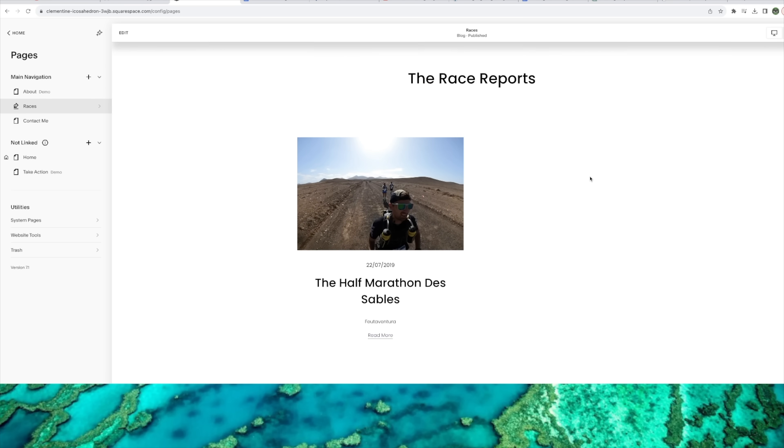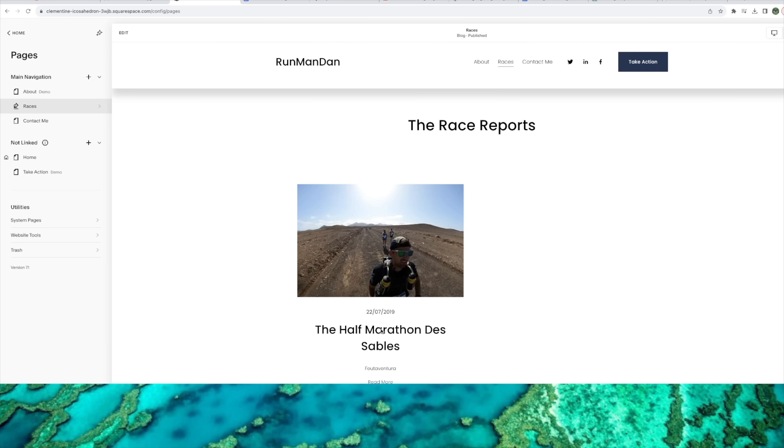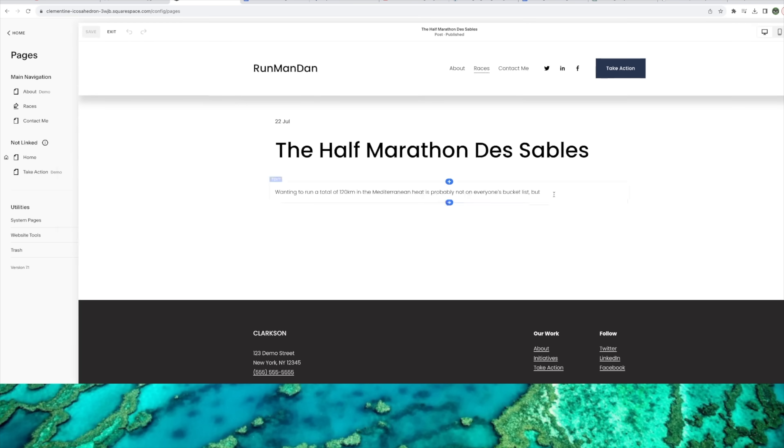And Squarespace has some powerful blogging tools too, to share stories, photos, videos and updates. You can categorise, share and schedule your posts to make your content work for you. And as you can see, I've started my race reports on the races section of the Run Man Dan website. Now I've just got started, but I'm loving the creative process of it already and I can't wait till it's finished.